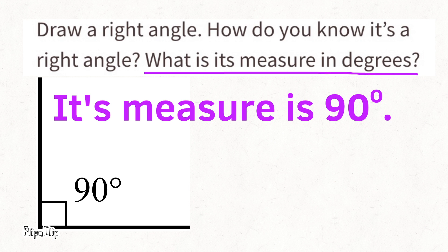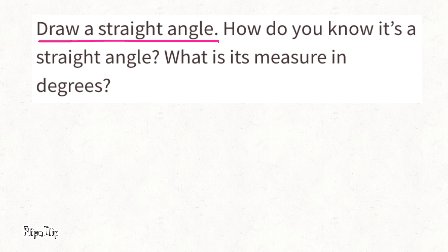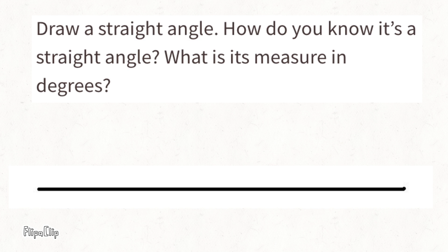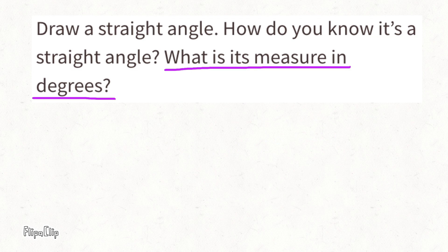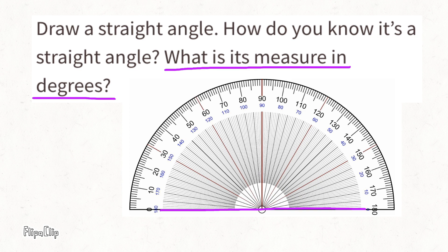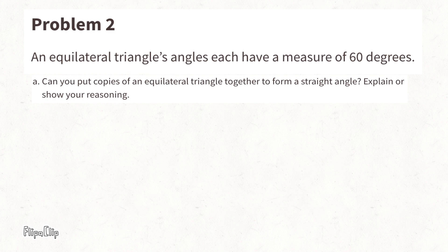Draw a straight angle. How do you know it's a straight angle? I know it's a straight angle because I drew a straight line with an angle of 180 degrees. Let's look at why a straight line is 180 degrees. Starting at zero and opening the angle up until it reaches 180 degrees, you'll see it makes a straight line spanning 180 degrees.